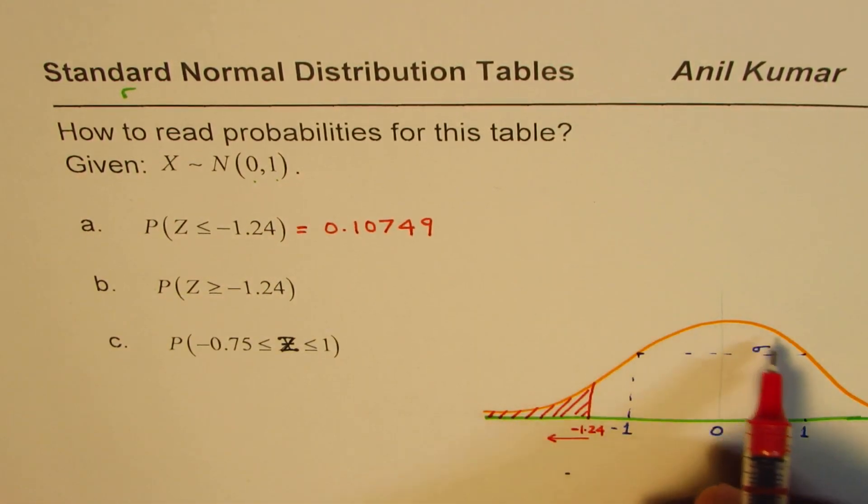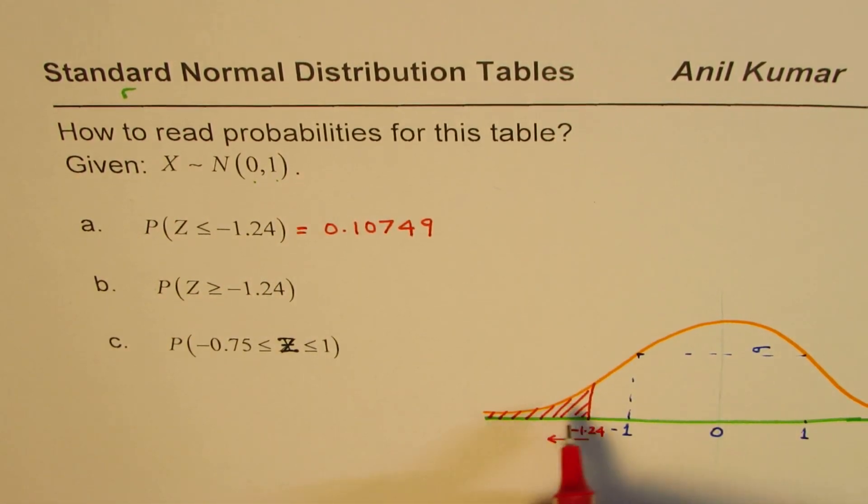This is a probability density graph. So the area gives you the probability.